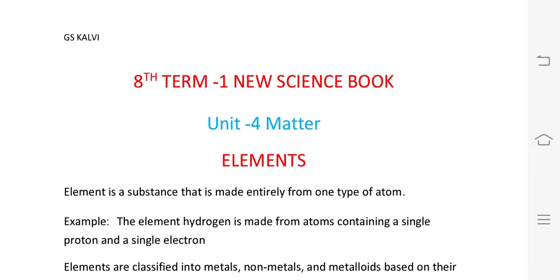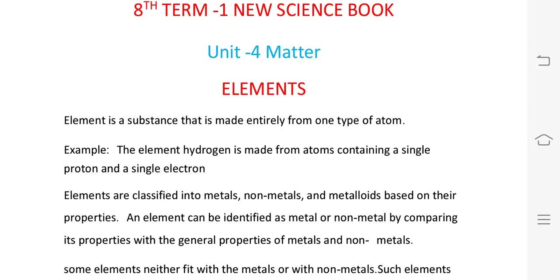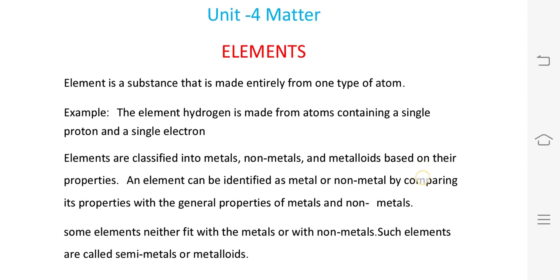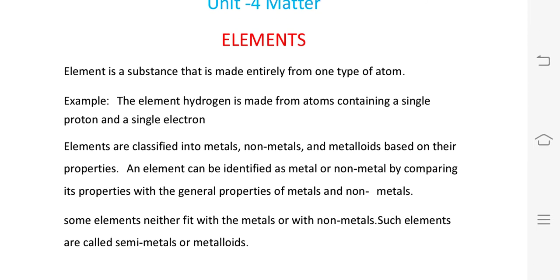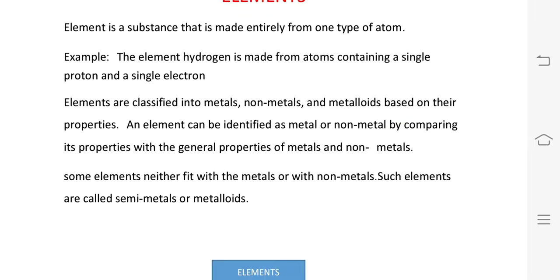An element is a substance that is made entirely from one type of atom. For example, the element hydrogen — a single proton and single electron combined into one type of atom. Elements are classified as metals, non-metals, and metalloids based on their properties.